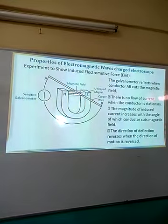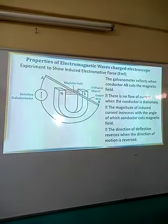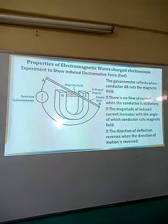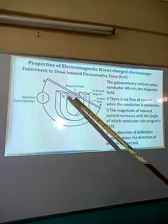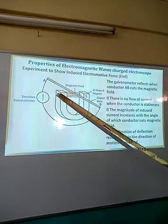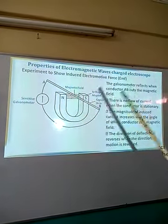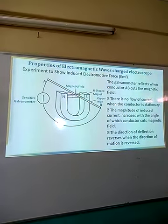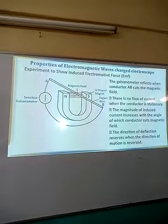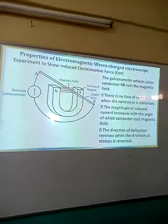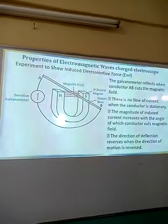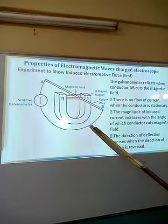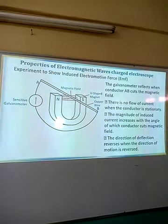When the conductor is made to move faster in the process of going through the fields, the deflection will be larger than the initial. This simple experiment illustrates that whenever there is a change in magnetic flux around the conductor, current is induced in the given conductor.